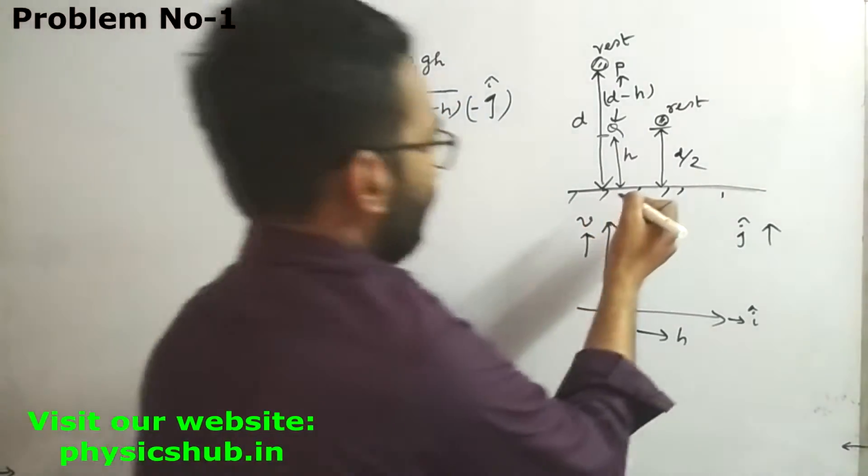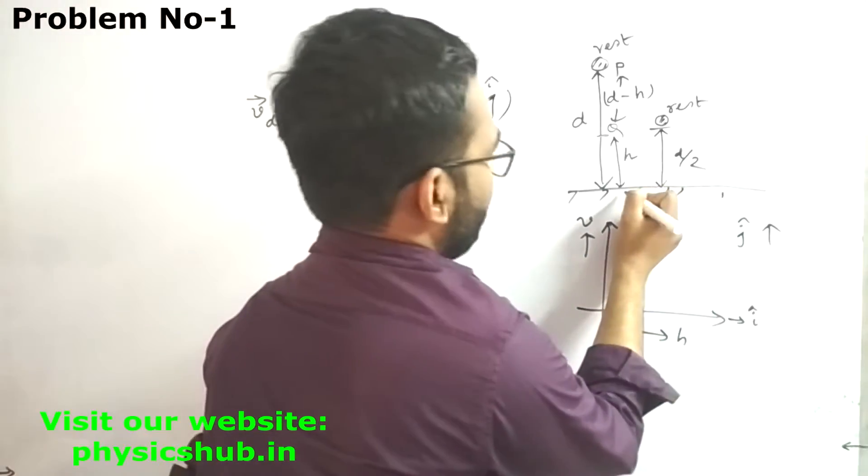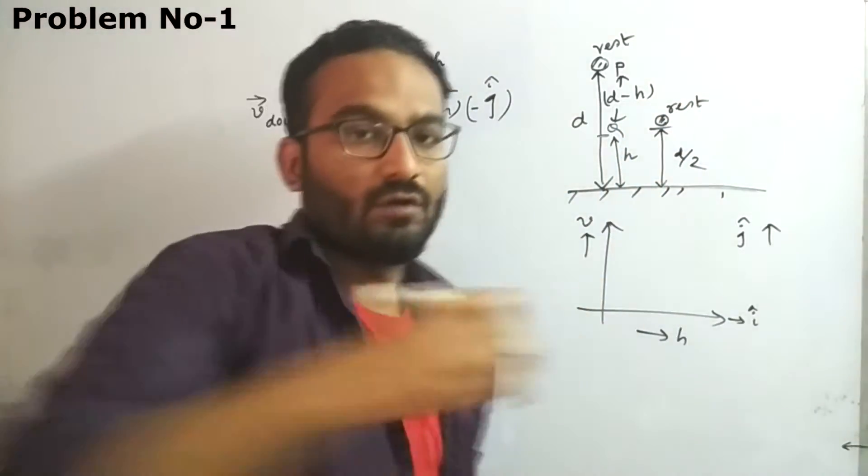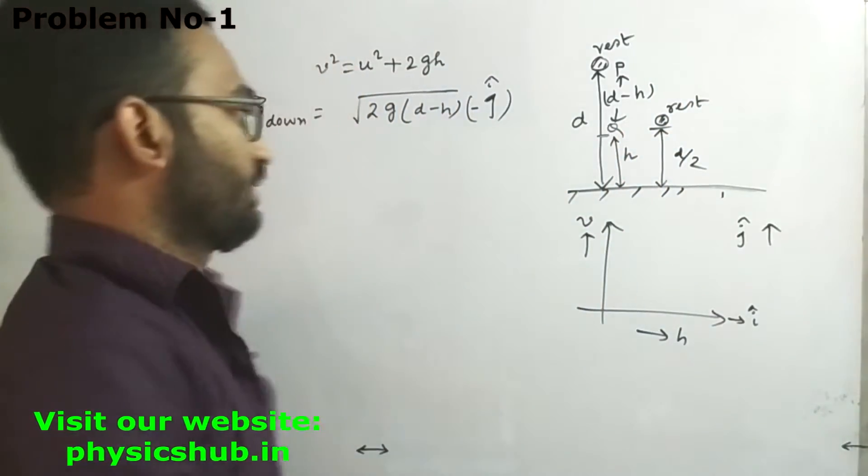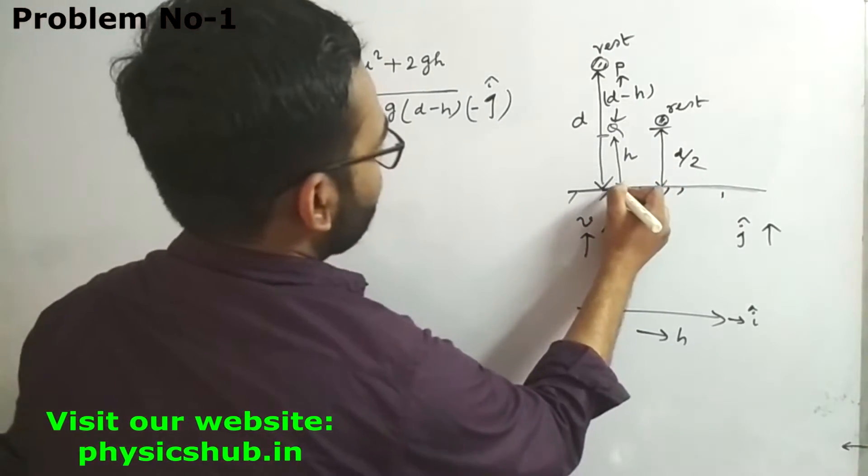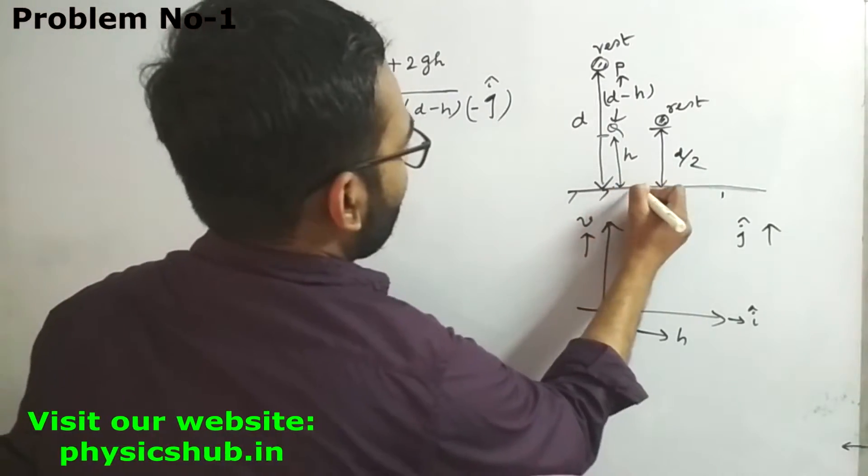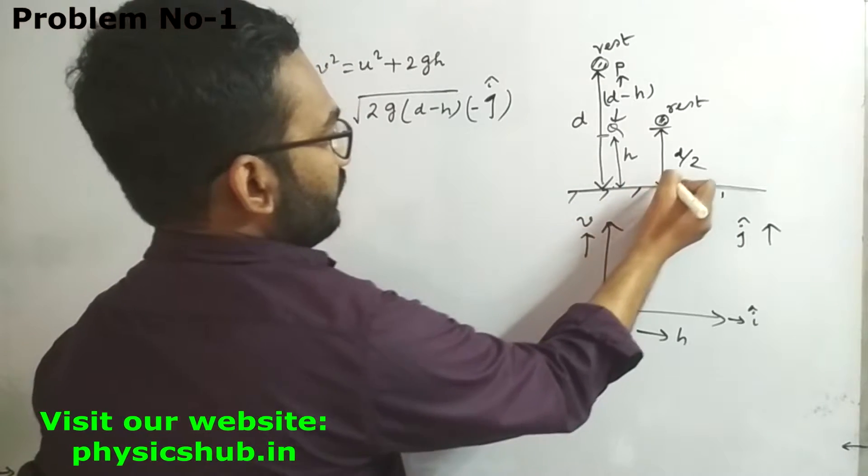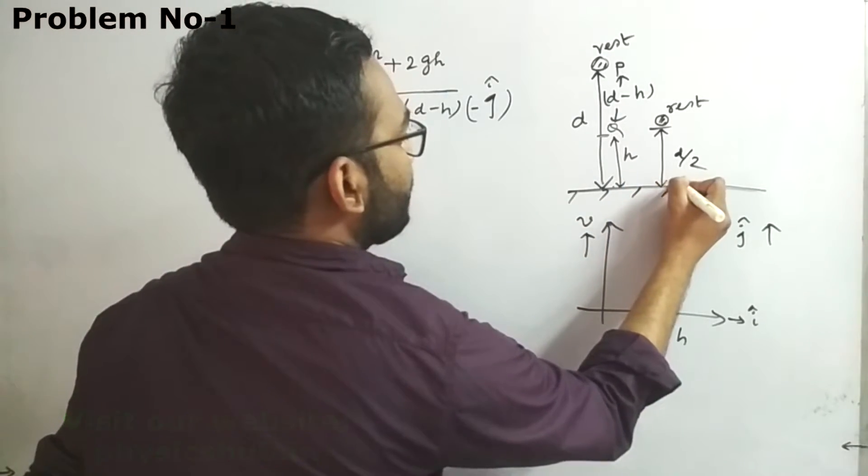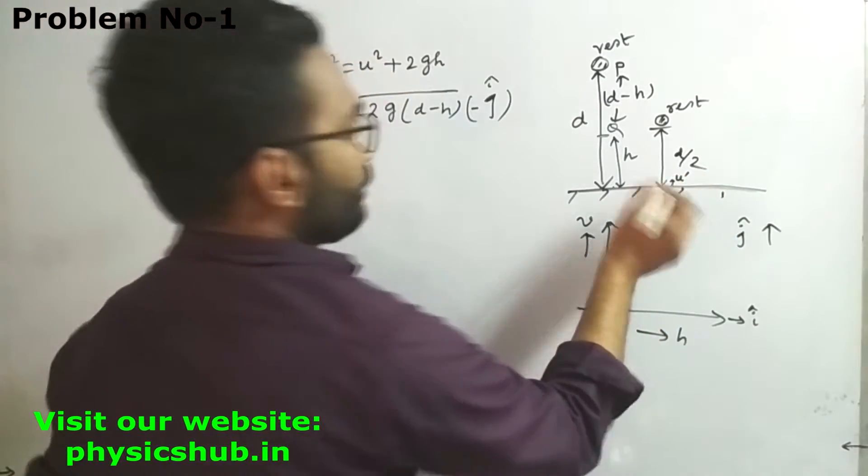After striking the ground, the ball achieves some reduced velocity. Suppose the velocity at the ground is v_down. The ball hits the ground and achieves some speed u'.